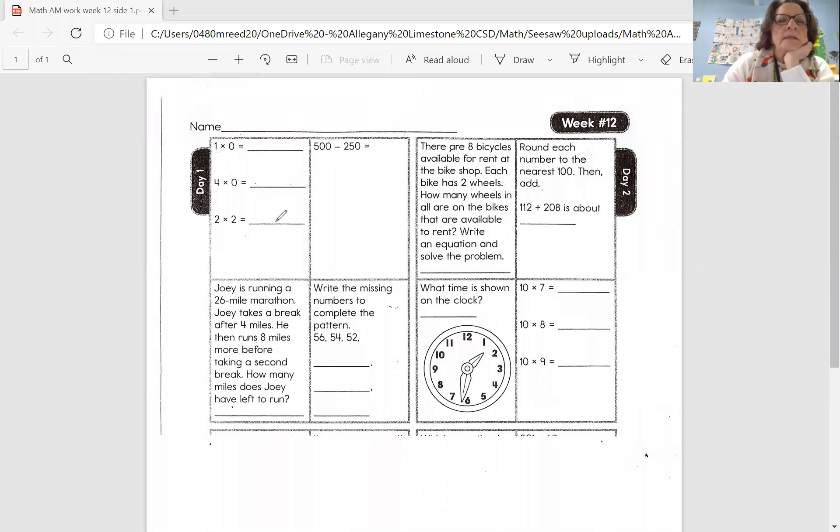One times zero is zero. Remember, zero is our hero. Any number times zero will give you zero. Four times zero is also zero, and two times two is four. Remember, when you multiply by two, you just double, think double. When you look at those number sentences with the zeros in them, there's always two zeros. It's different than multiplying by one when it's one and the same, and the other two numbers are the same.